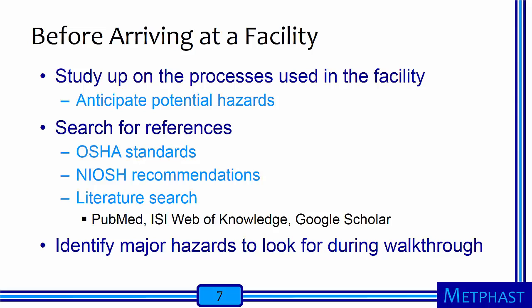Before arriving at the facility, you should educate yourself. Study up on the processes used in the facility as part of anticipating potential hazards. There are numerous sources of reference material, including OSHA standards such as best practices and permissible exposure limits, and NIOSH recommendations including intelligence bulletins and recommended exposure limits. You can also find up-to-date materials through PubMed, Web of Knowledge, or Google Scholar. You should synthesize this information to identify the major hazards to look for during a facility walkthrough.